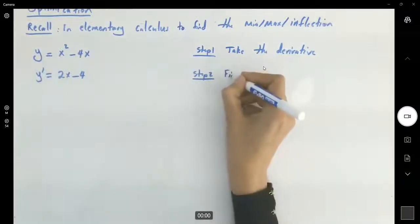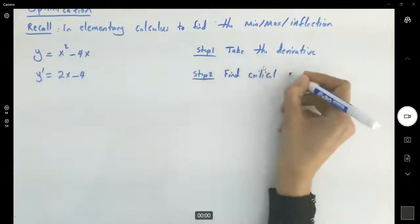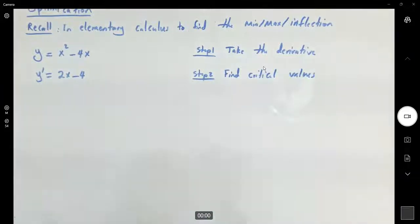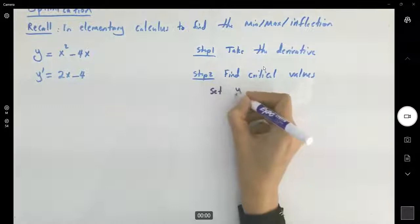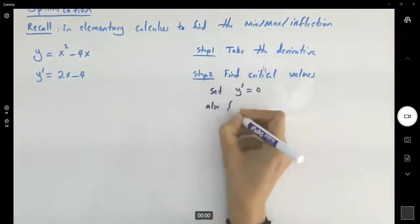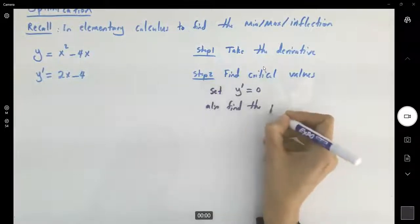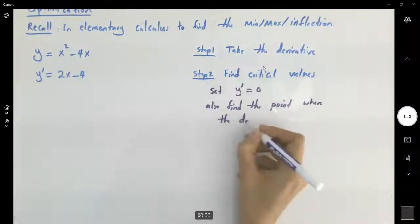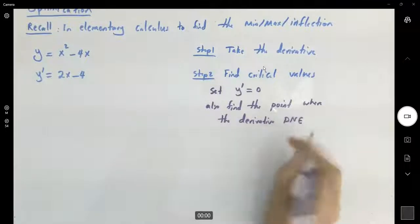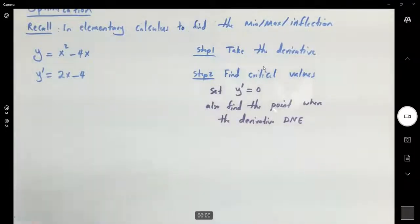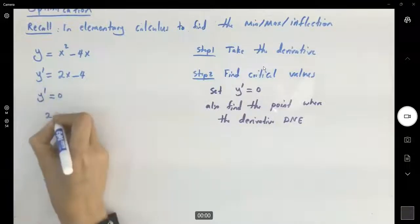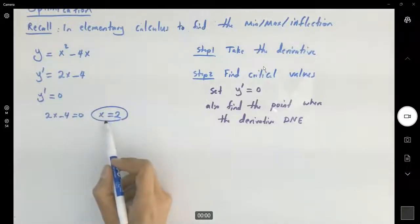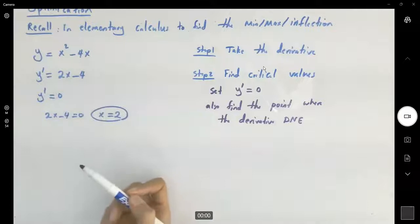In step two, find critical values. To find critical values you have two steps: you need to set the derivative equal to zero, and also find the points where the derivative doesn't exist. You take this, you set it equal to zero: 2x minus 4 equals zero, so x is 2. Then you say that at x equals 2, you either have a minimum or you have a maximum.